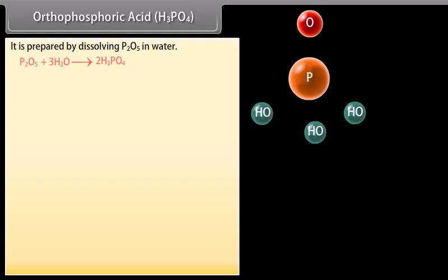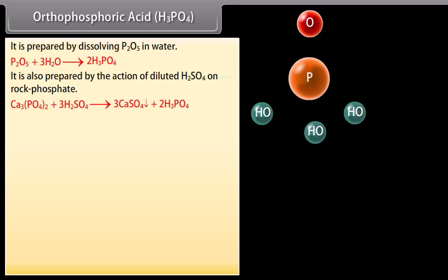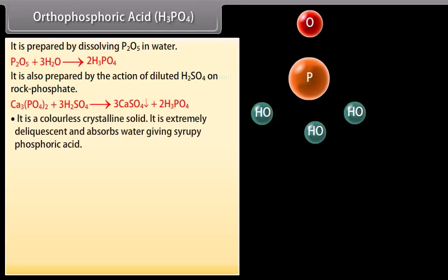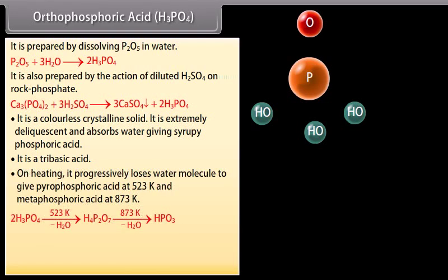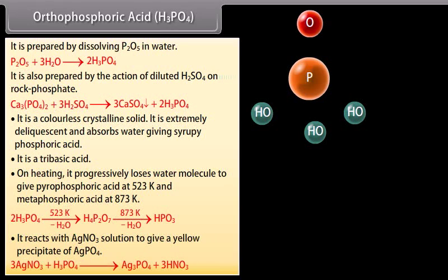Orthophosphoric acid (H3PO4) is prepared by dissolving P2O5 in water or by the action of dilute H2SO4 on rock phosphate. It is a colorless crystalline solid, deliquescent, absorbing water to give syrupy phosphoric acid. It is a tribasic acid. On heating, it progressively loses water to give pyrophosphoric acid at 523 Kelvin and metaphosphoric acid at 873 Kelvin. It reacts with AgNO3 solution to give a yellow precipitate of Ag3PO4.